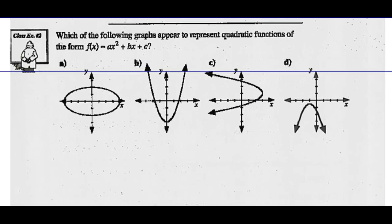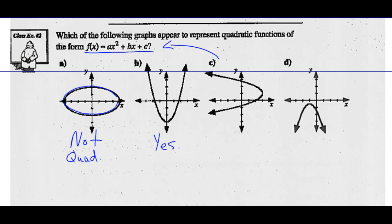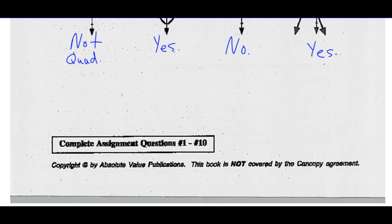Example 2: which of the following graphs represent quadratic functions of the form f(x) equals ax squared plus bx plus c? Graph A has a U-shaped curve combined with another to form an ellipse — definitely not a parabola, so not quadratic. Graph B is a parabola opening up, so yes, it is quadratic. Graph C is a U-shaped curve opening to the left — that's a quadratic in a different form, not this standard form, so no. Graph D is a U-shaped curve opening down, which is in the standard form — so yes. To be in this form where x is squared, the parabola must open up or down, not right or left. So you've got your assignment — let's get after it.